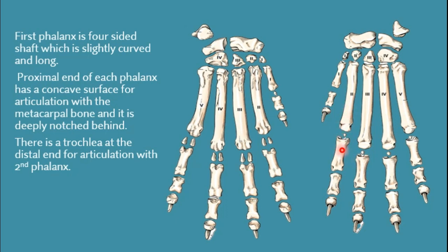At the palmar aspect of the first phalanx there is a deep notch, as you can see in the picture. Then after this proximal extremity there comes the body of the first phalanx, which is a long body. The distal aspect of the first phalanx contains a trochlea for articulation with the second phalanx. At the lateral side of the distal end there is a depression for ligamentous attachment.